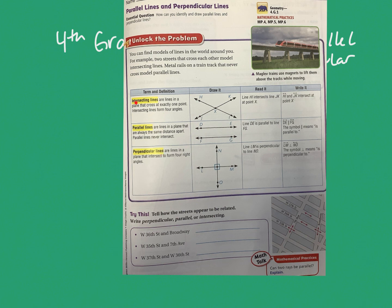Perpendicular lines are intersecting lines, but they have one special rule: they are lines in a plane that intersect to form four right angles. They go straight directly across from each other, and each angle must be 90 degrees — they meet almost like a T, continuing through like an intersection on a road. We would read it as: line LM is perpendicular to line NO.